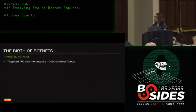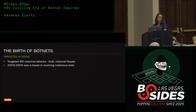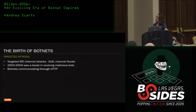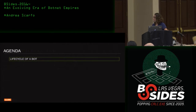It started out with bots participating in targeted IRC attacks — denial of service attacks and channel floods. In 2003 and 2004, there was a boost in malicious bots on the net, and they started to move away from just communicating through IRC to HTTP, because with firewalls you could just block IRC traffic, but with HTTP it's usually always allowed through a firewall.